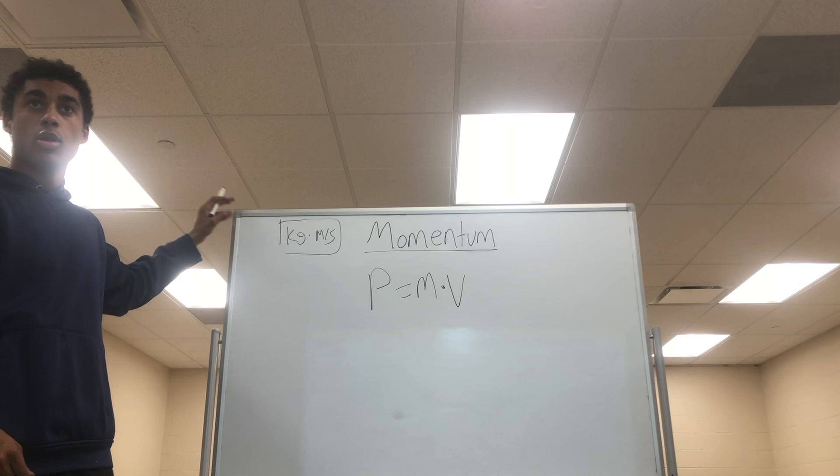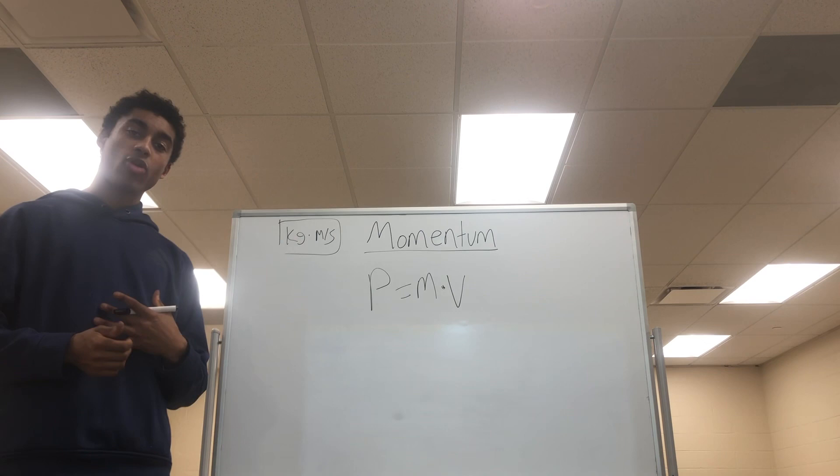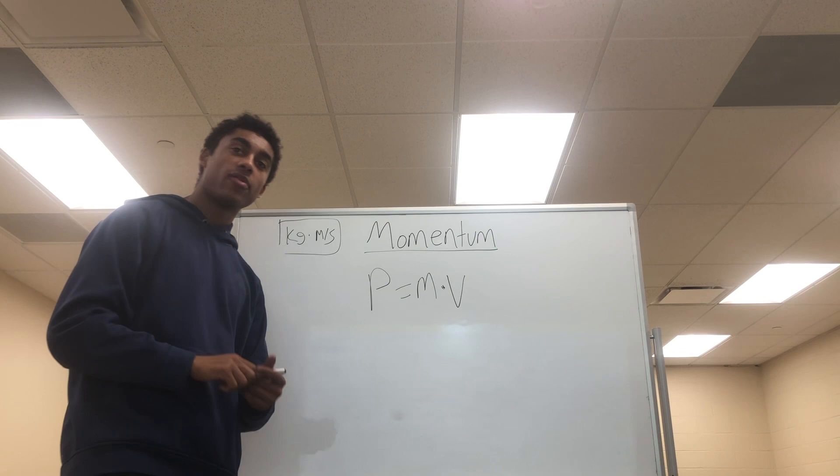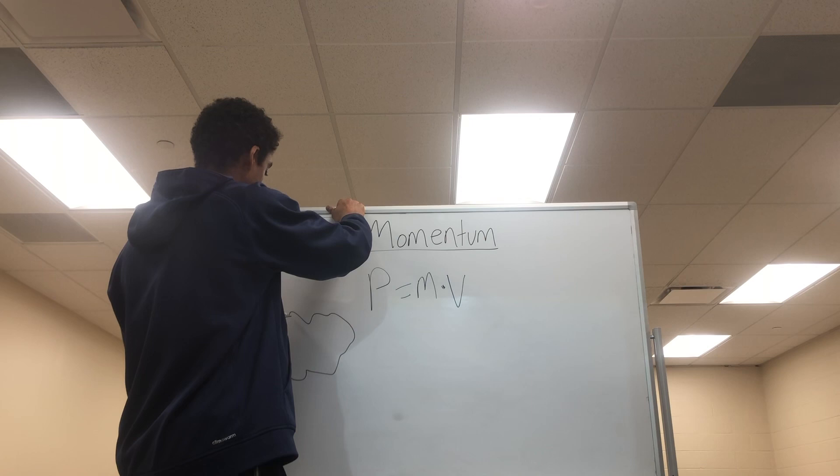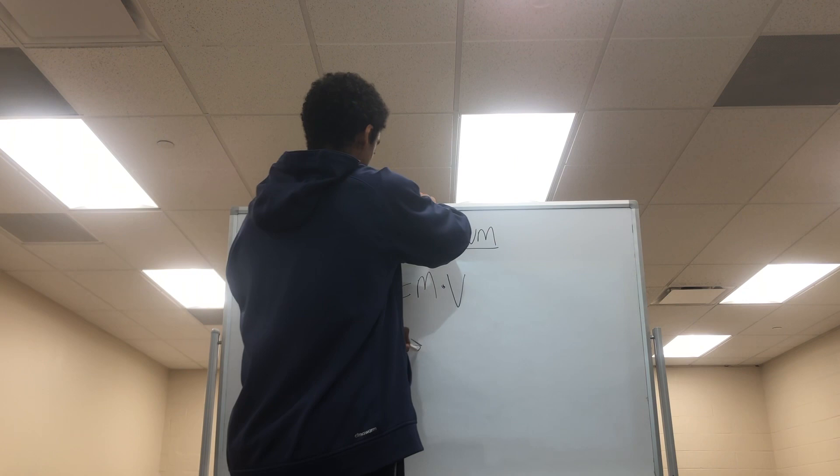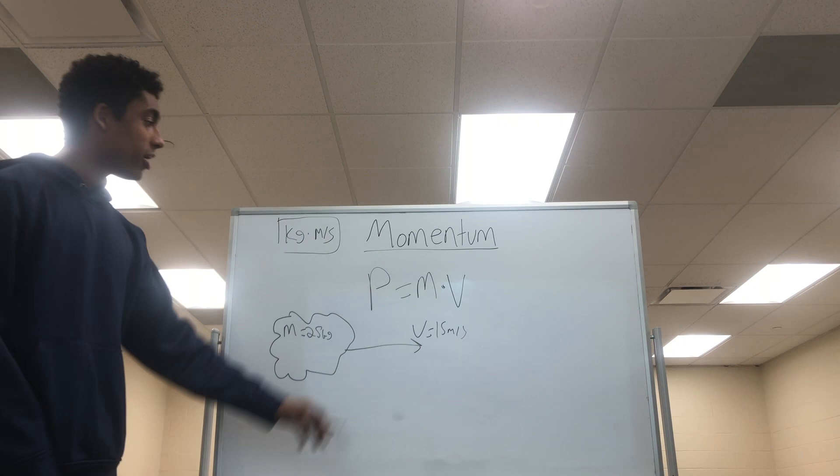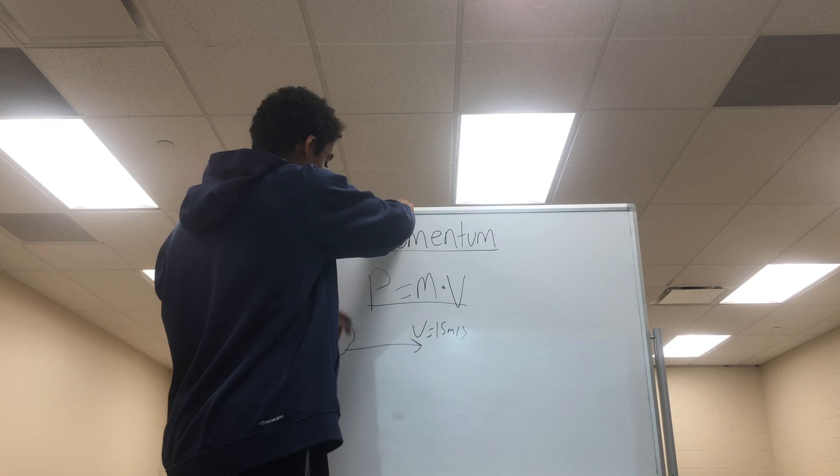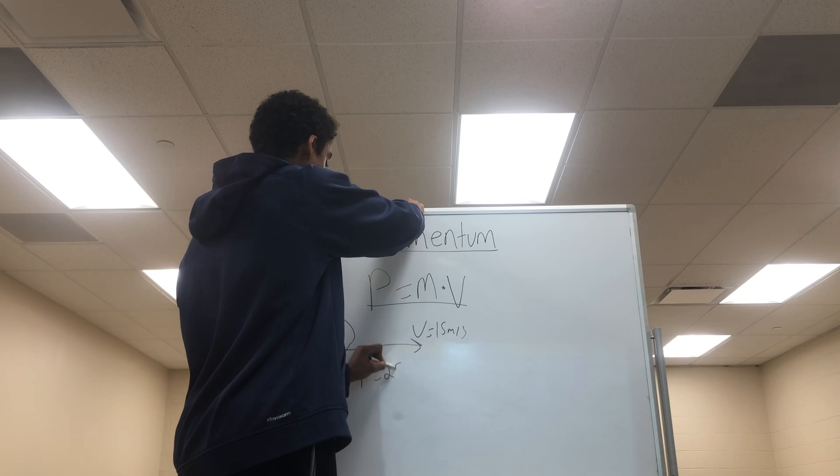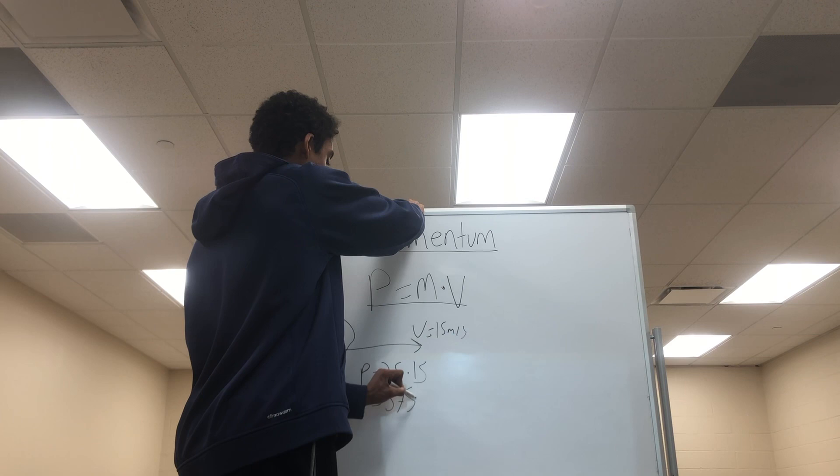Let's consider a rock traveling at 15 meters per second with a mass of 25 kilograms. By using this equation, we can calculate that the momentum possessed by this rock is equal to 25 times 15 or 375 kilograms times meters per second.